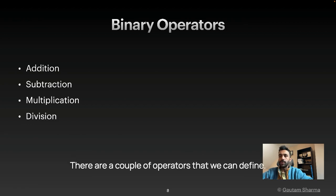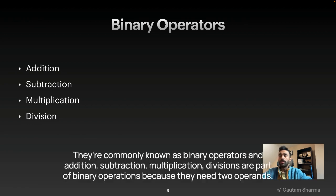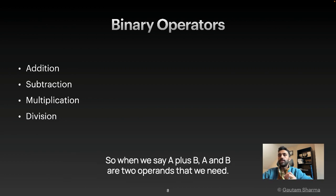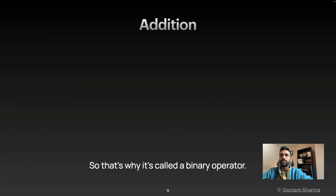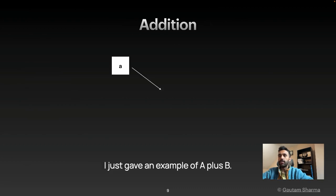There are a couple of operators that we can define. They're commonly known as binary operators. And addition, subtraction, multiplication, and divisions are part of binary operations because they need two operands. So when we say A plus B, A and B are two operands that we need. So that's why it's called a binary operator.